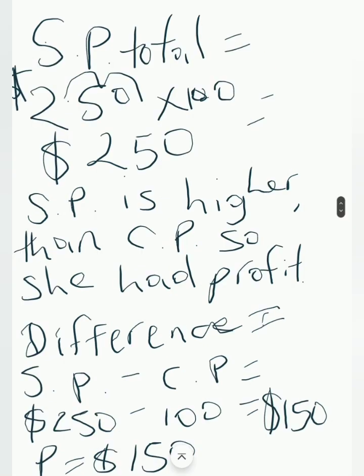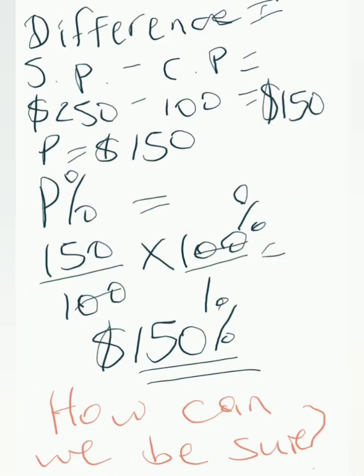Now it's time to compute and I decided to do the multiplication method first. First I multiplied the $2.50 by 100 to get the total selling price after she would have sold each 100 unit and I got $250. Now the $250, the selling price was higher than the cost price. So naturally she had a profit. I then worked out the difference and the difference turned out to be $150. So her profit was $150 after selling all 100 units.